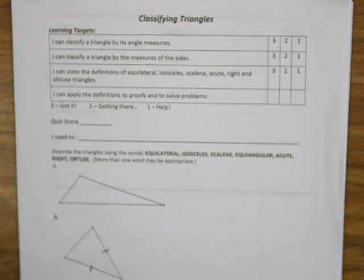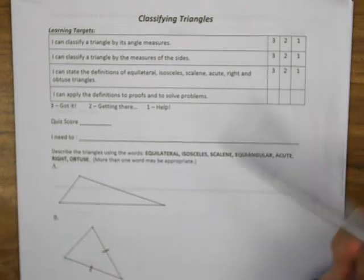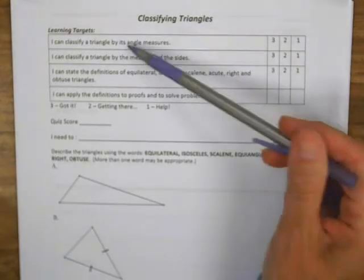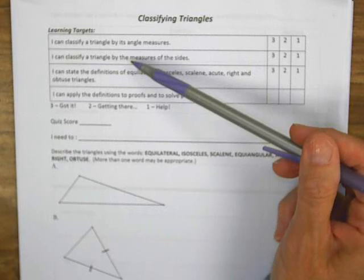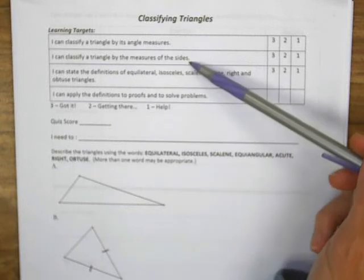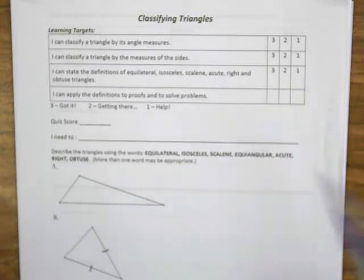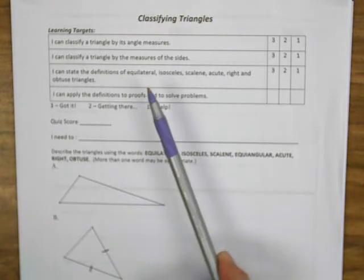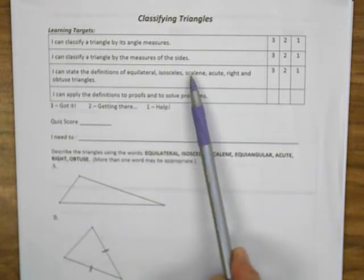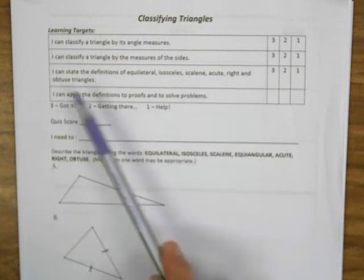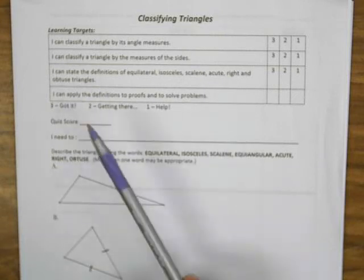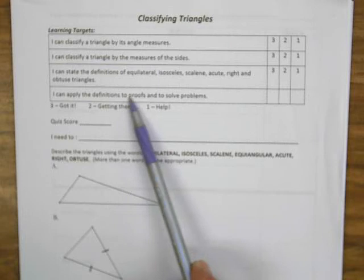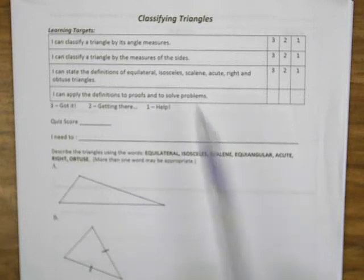Lesson 3.6 is on classifying triangles. Looking at our targets, we're going to learn to classify triangles by both angle measure and the measure of the sides. The terms we'll be using include equilateral, isosceles, scalene, acute, right, and obtuse triangles. We are also going to apply these definitions to proofs and to solve problems, which is the bulk of what we do.